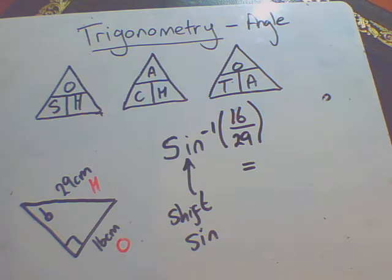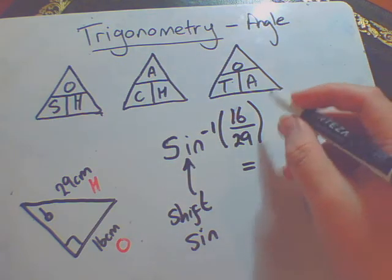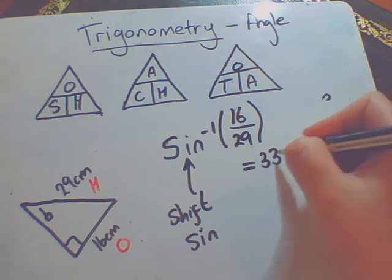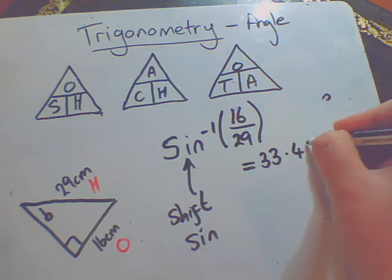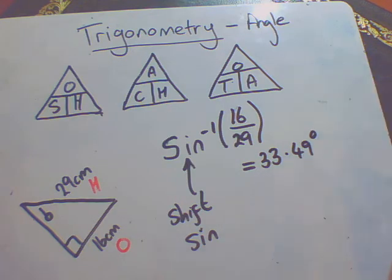Again, if you type it into your calculator exactly as it is written on the board just there, you should get an angle of 33.49 degrees. Remember, don't panic that it's a decimal. That is perfectly acceptable.